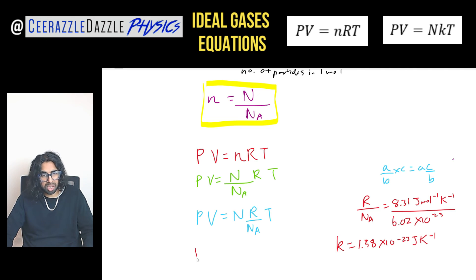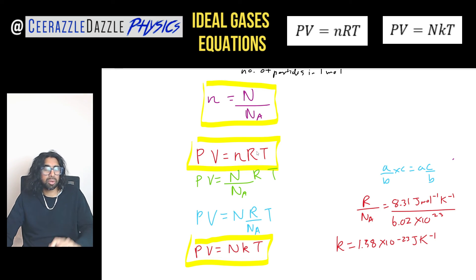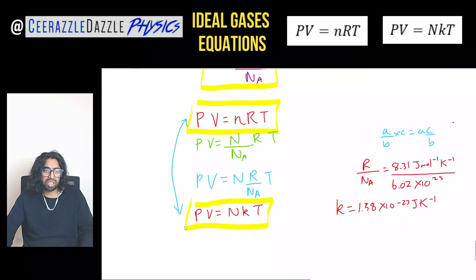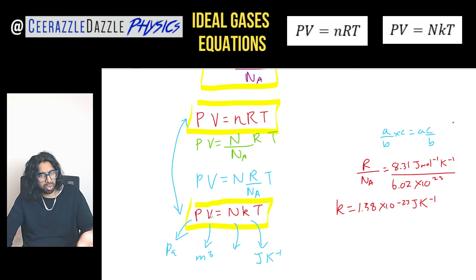Replacing R / Nₐ with Boltzmann's constant k gives us PV = NkT, where capital N is the number of particles in your sample. So we have two forms: PV = nRT (using number of moles and molar gas constant) and PV = NkT (using number of particles and Boltzmann's constant). For PV = NkT the units are: pressure in Pascal, volume in meters cubed, N is a dimensionless number, k in joule per kelvin, and temperature in Kelvin.